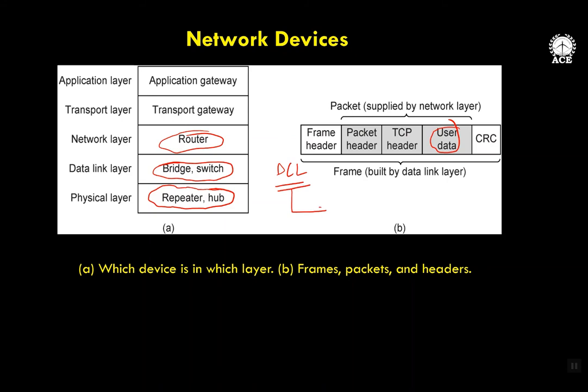From the data link layer, it goes to the physical layer, and from the physical layer it gets transmitted onto the communication channel in the form of bits — this we have seen many times.